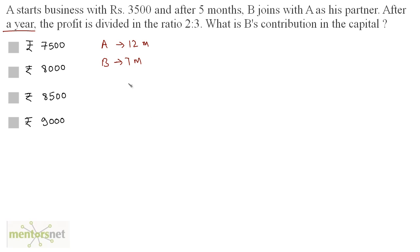Now, we have been given the ratio of their profits which is 2 by 3. So 2 by 3 equals the amount invested by A multiplied by the time period of A. So 3500 times 12 upon the amount invested by B. Let it be X because that's not given. That's what we have to find out. B's contribution times the time period of B is 7 months.